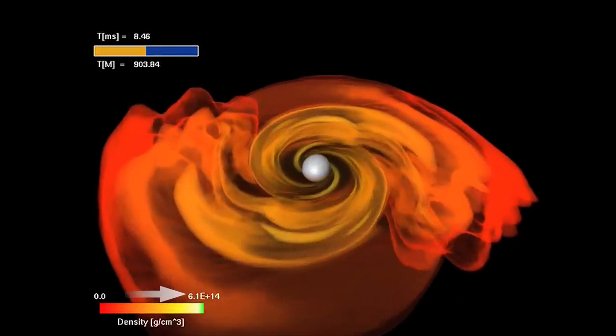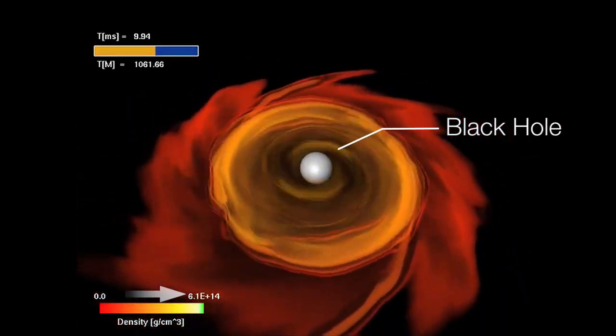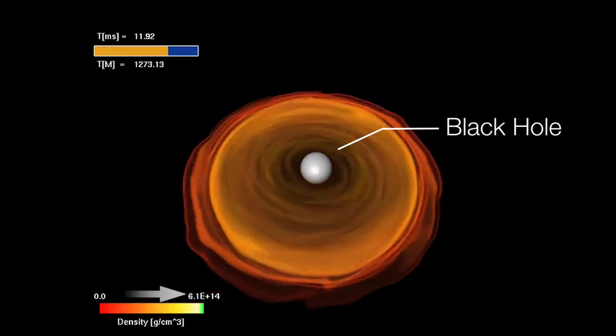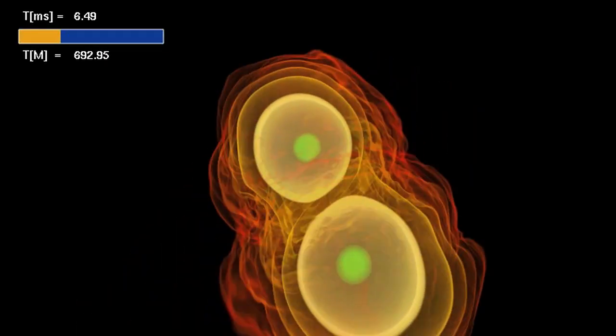Earlier simulations demonstrated that mergers could make black holes. Others had shown that the high-speed particle jets needed to make a gamma ray burst would continue if placed in the swirling wreckage of a recent merger.